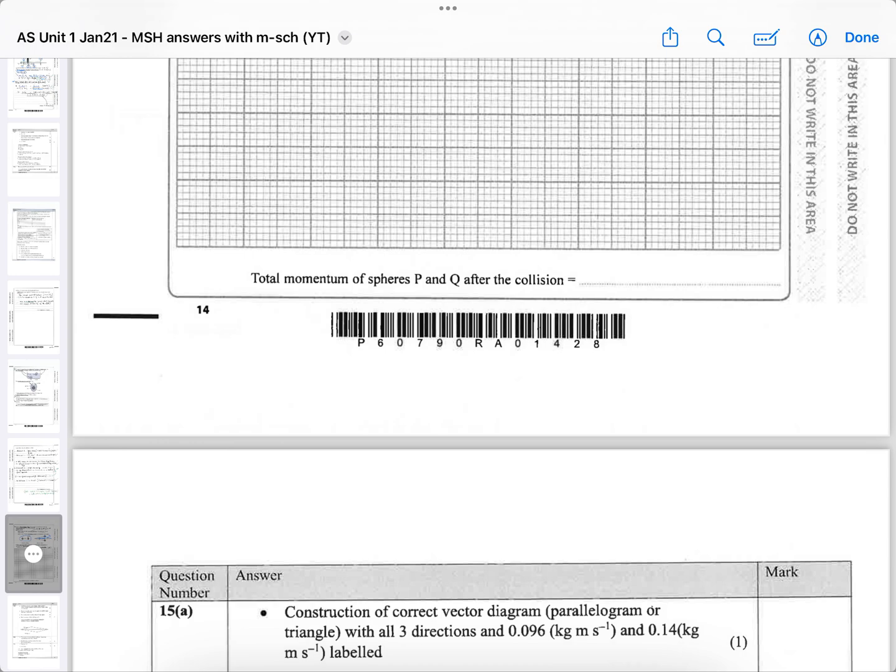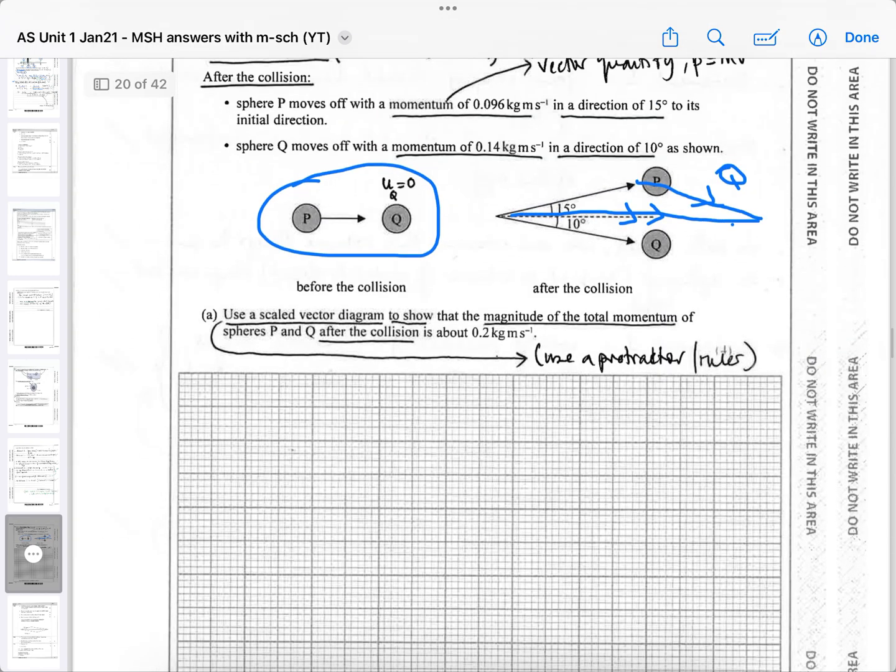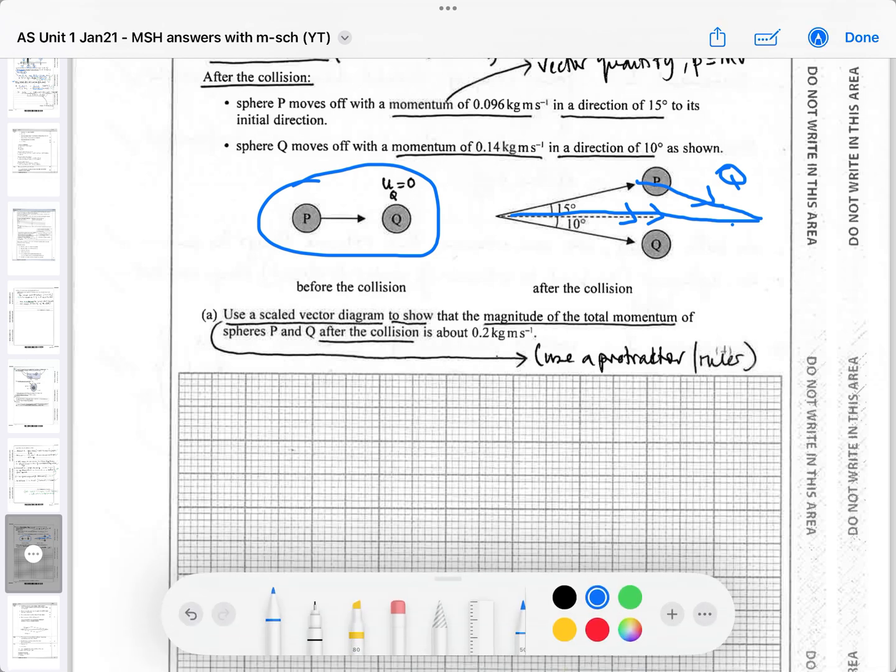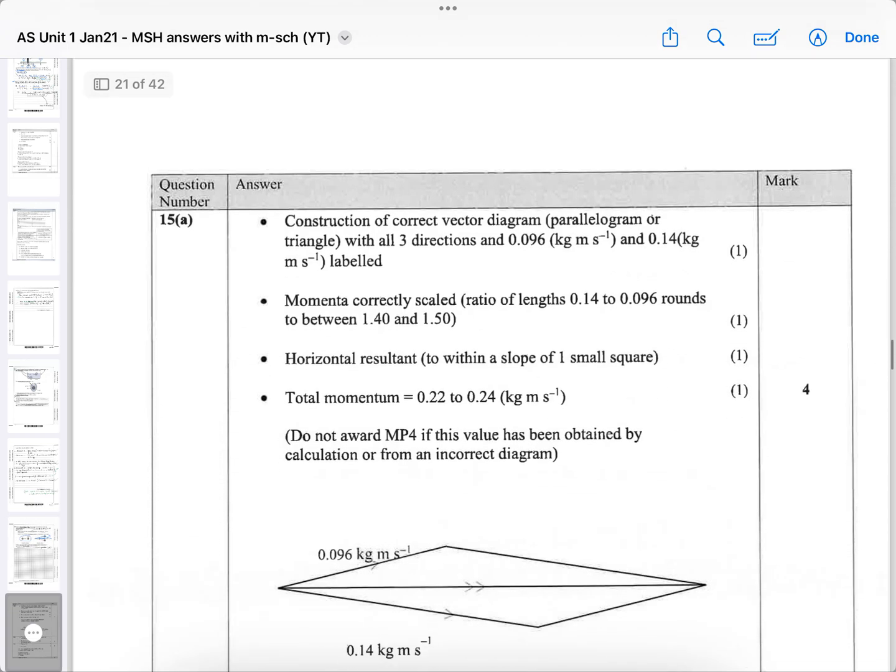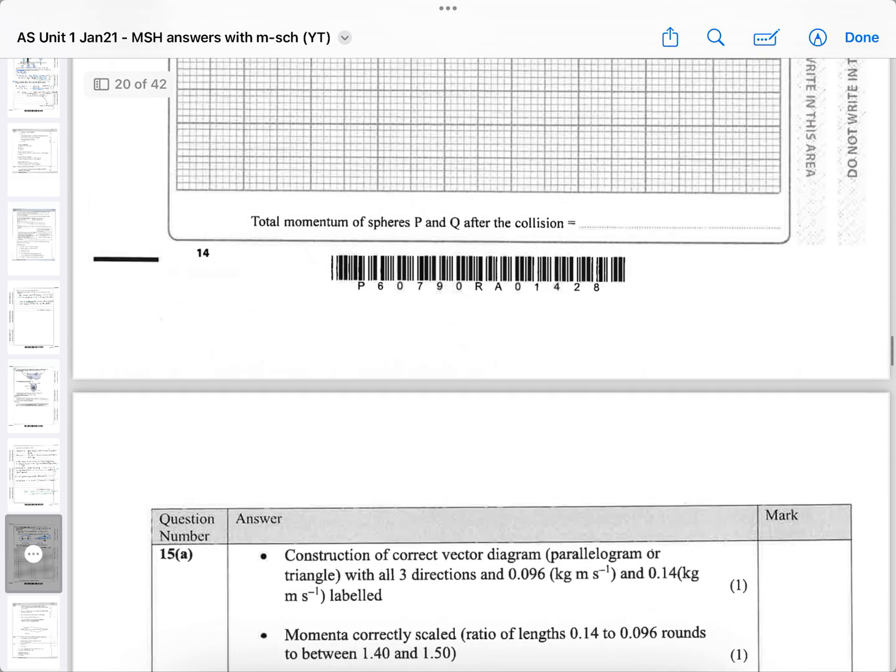You get one mark, construction of a correct vector diagram, parallelogram or you can do a triangle. You don't have to—the way I did it was a triangle. I drew it as a triangle going up this way and then Q going the other way. And that's the triangle which is half a parallelogram. The triangle rule or the parallelogram rule where you do it as a quad. So you construct a correct vector diagram, parallelogram or triangle, with all three directions, 0.096 and 0.14 kilogram labeled. So you've got to label them to get the first mark.